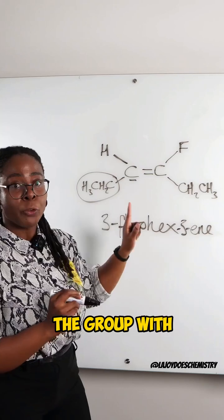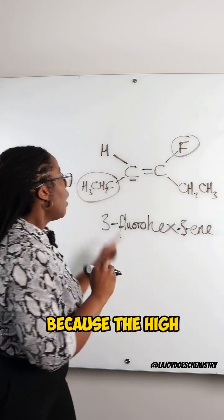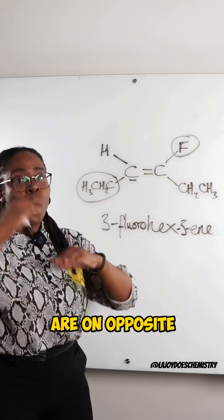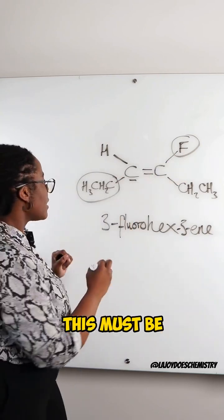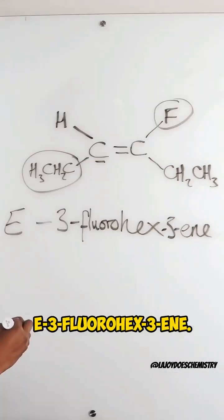Because the high priority groups are on opposite sides of the molecule, this must be the E isomer, giving us E-3-fluoro-hex-3-ene.